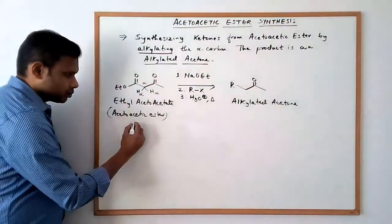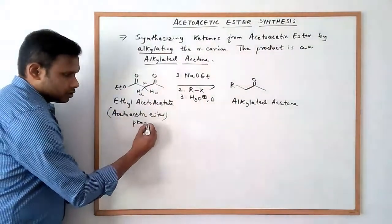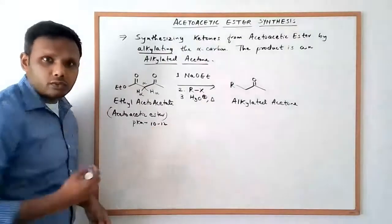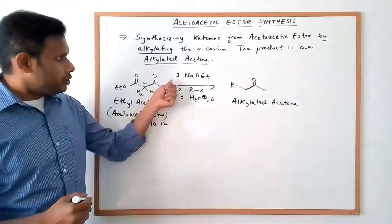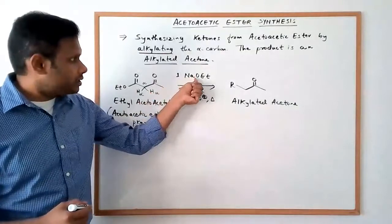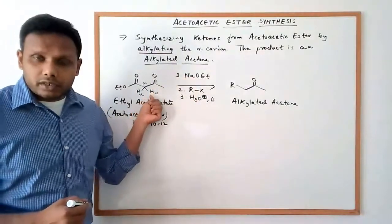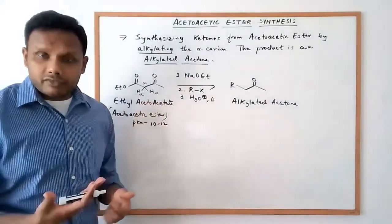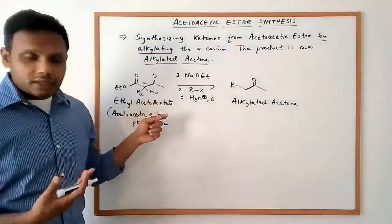Their pKa values are going to be somewhere in the range of 10 to 12 pKa units. So when you treat it with a base, you should be able to deprotonate these alpha hydrogens very effectively and efficiently.